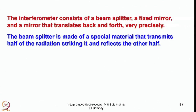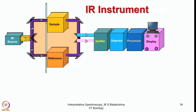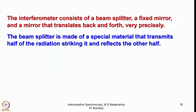The interferometer consists of a beam splitter, a fixed mirror, and a mirror that translates back and forth very precisely. The beam splitter is made of a special material that transmits half of the radiation striking it and reflects the other half.